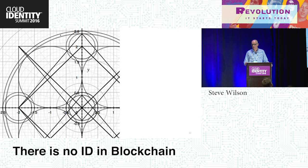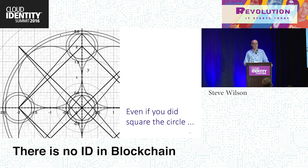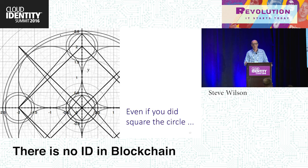In a sense, that squared the circle — we didn't think it could be done, and it was done. But if Nakamoto squared the circle, the question is: so what? Let's think about geometry — if you squared the circle in geometry, is that going to give you some new algorithm for factoring prime numbers or some new way of doing calculus? The blockchain problem is really, really specific.